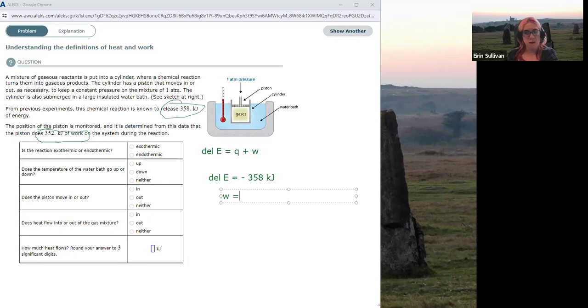So W equals plus 352 kilojoules. In this case, we know delta E, we know W, and we're going to be asked to solve for Q.